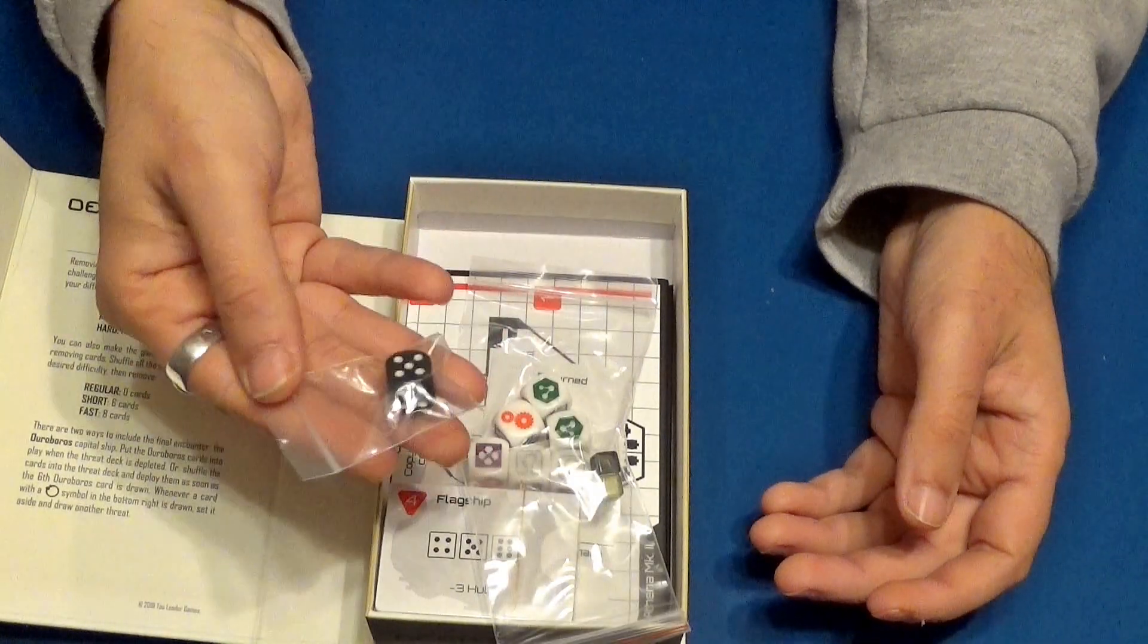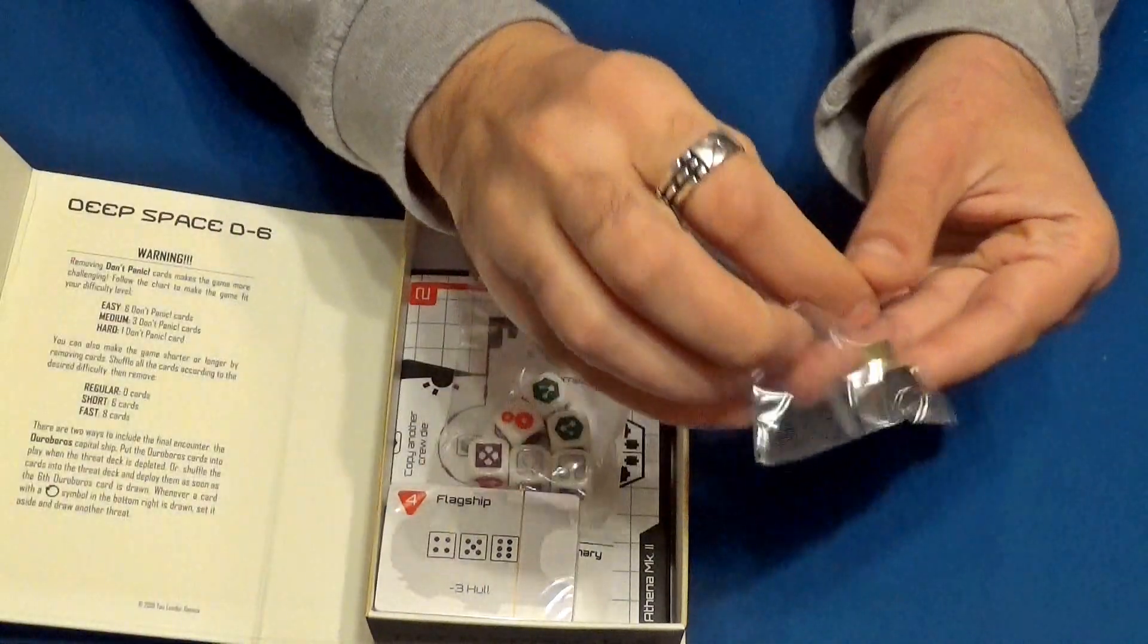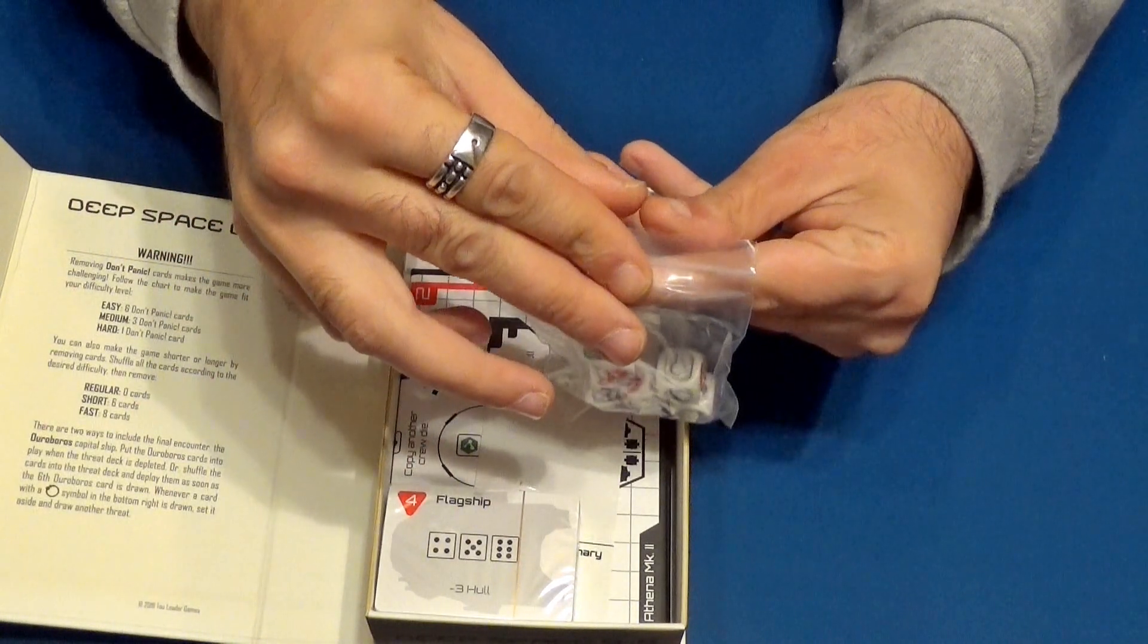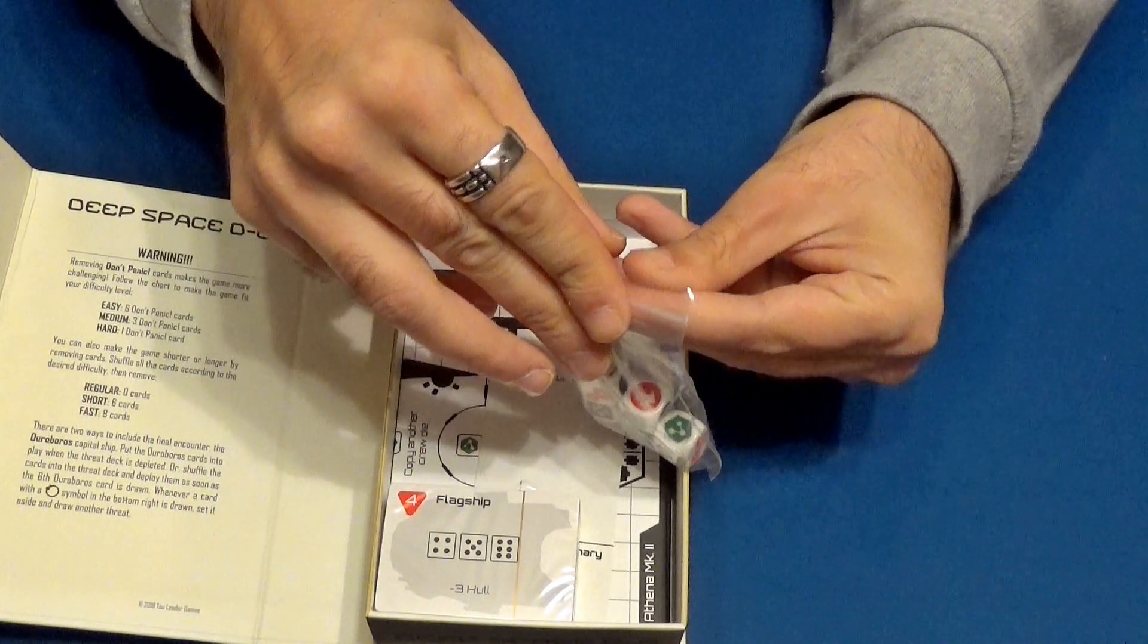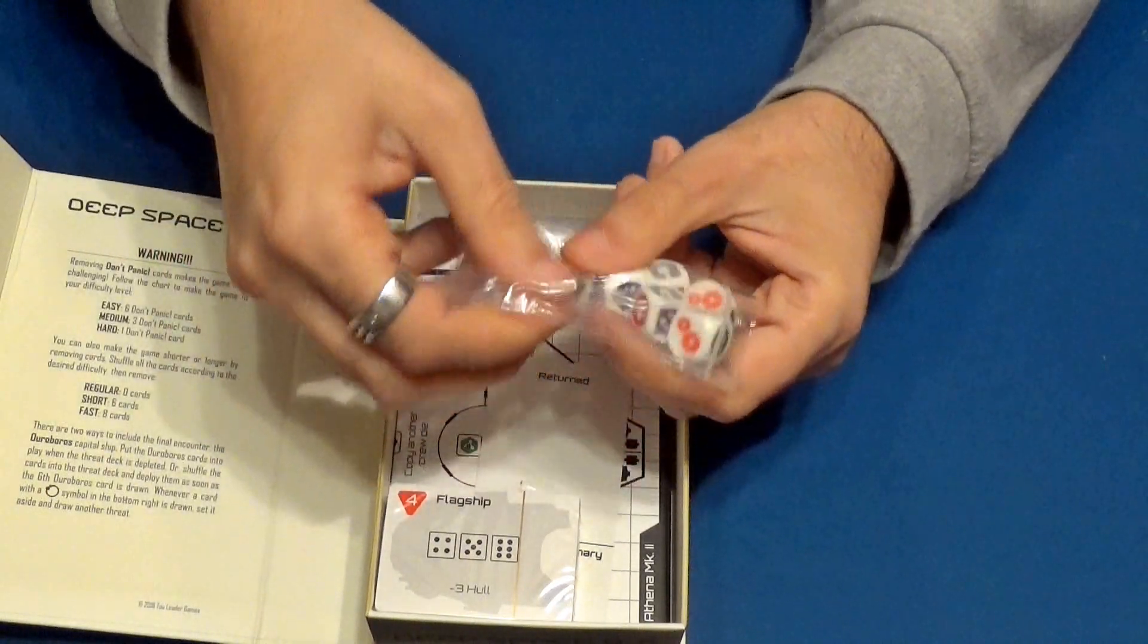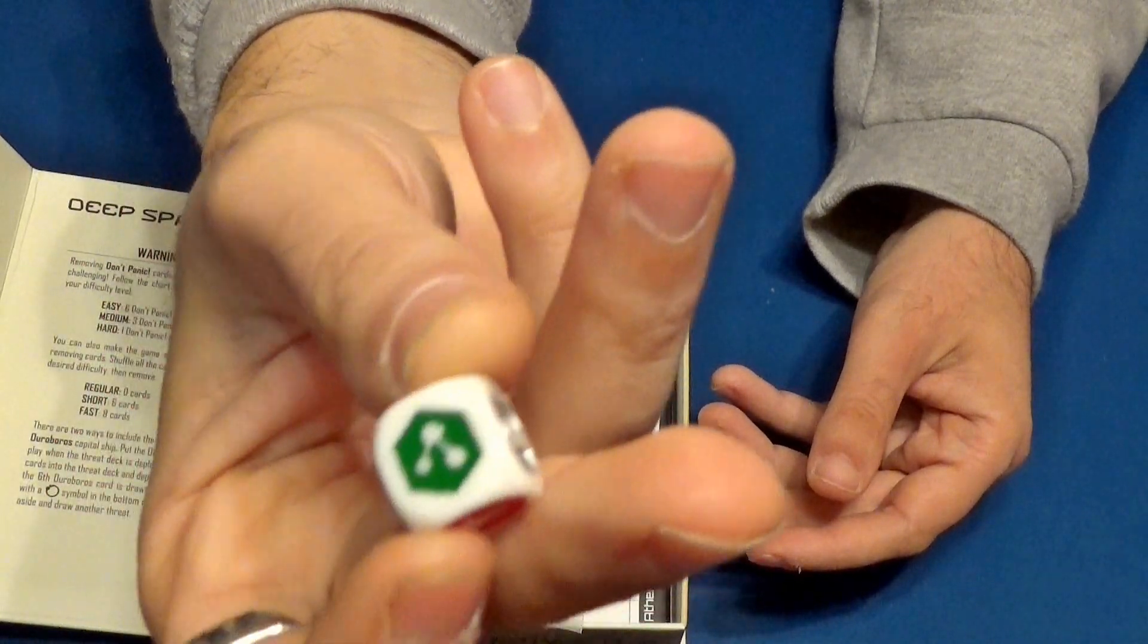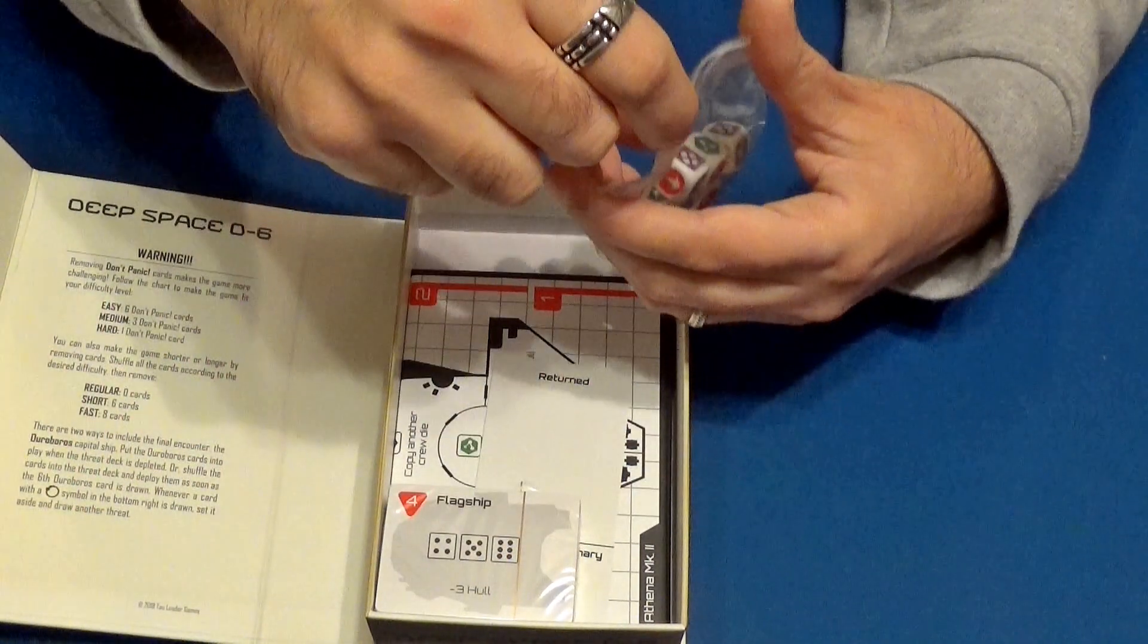Aquí tenemos a un dado de seis normal de corriente. Aquí vemos unos cubillos que tenemos un poco translúcidos. Si lo podemos ver un poco más de cerca. Aquí tenemos unos dados personalizados muy chulos. Como podéis ver aquí. Creo que todos son más o menos lo mismo. Y creo yo que estos son los resultados que van a indicar las acciones de las naves. Creo recordar que cada uno de los dados representa a un tripulante y dónde va a ir cada tripulante.